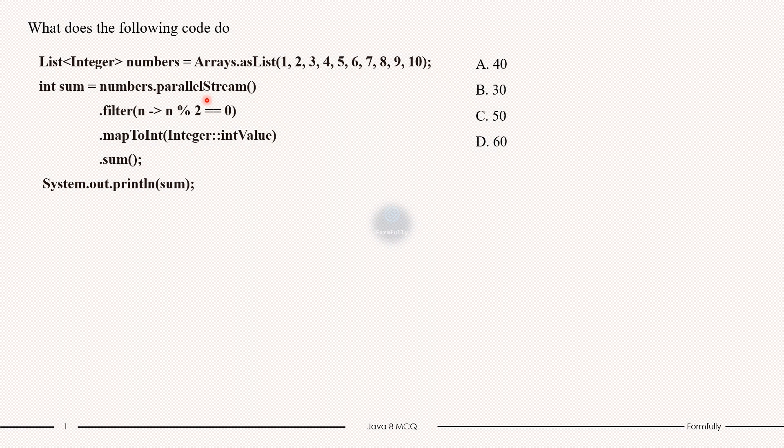Then we have filter method. Filter method applies a condition. In this case the condition is n mod 2 equals 0, which checks if the number is even or not. The filter keeps only the even numbers, that is 2, 4, 6, 8, and 10, and discards the rest.